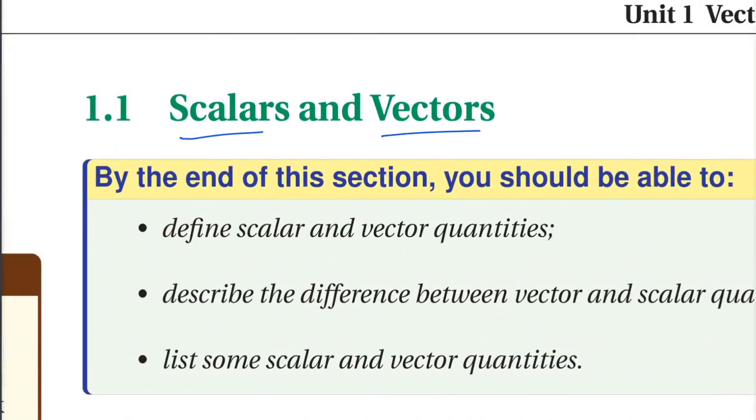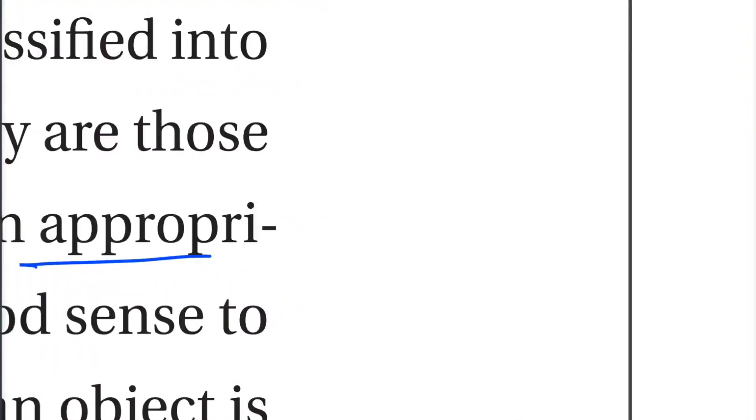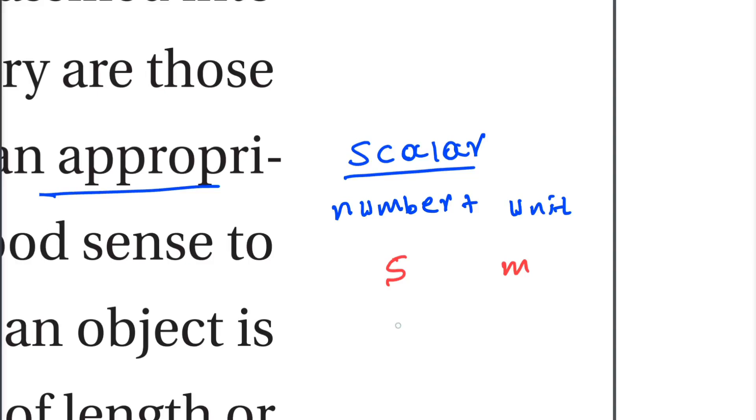Scalars and vectors. As discussed in the introduction, physical quantities can be classified into categories. Physical quantities that fall in the first category are those that can be completely specified by a number together with an appropriate unit of measurement. Scalar is called number plus unit. Distance is 5 meters, mass is 3 kg. The number is unit, the number is magnitude.